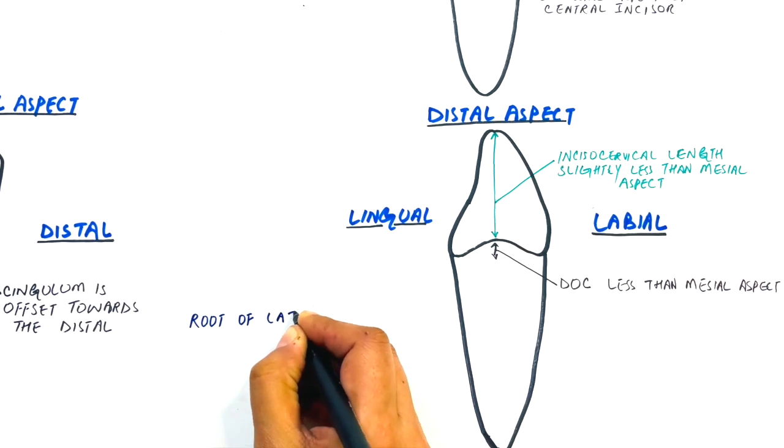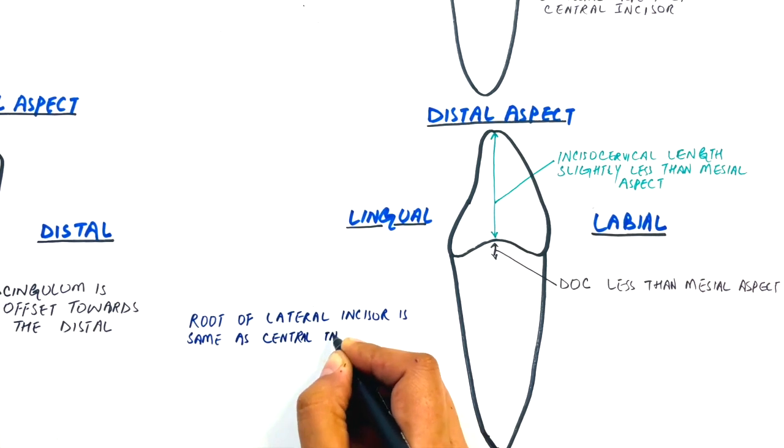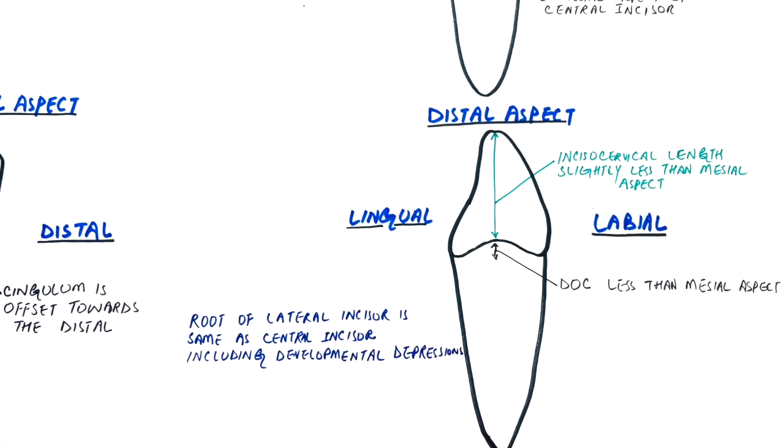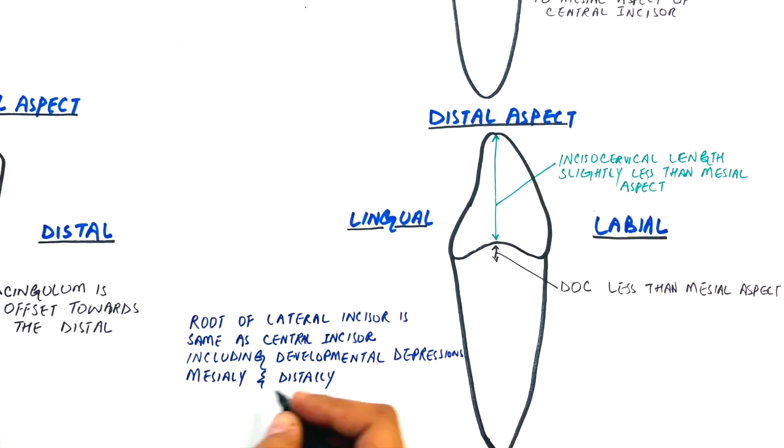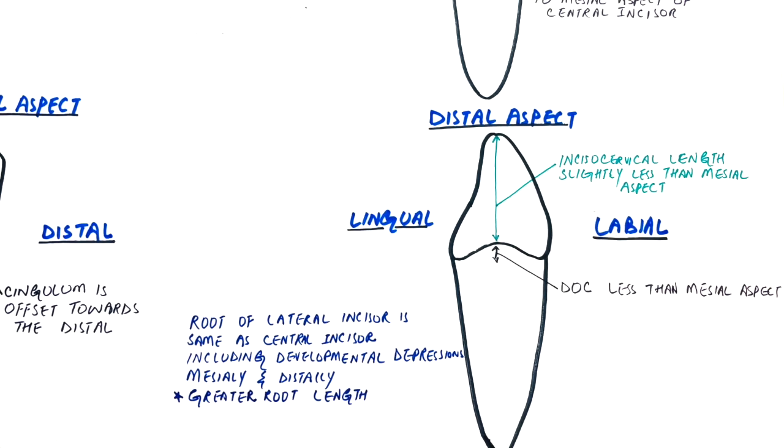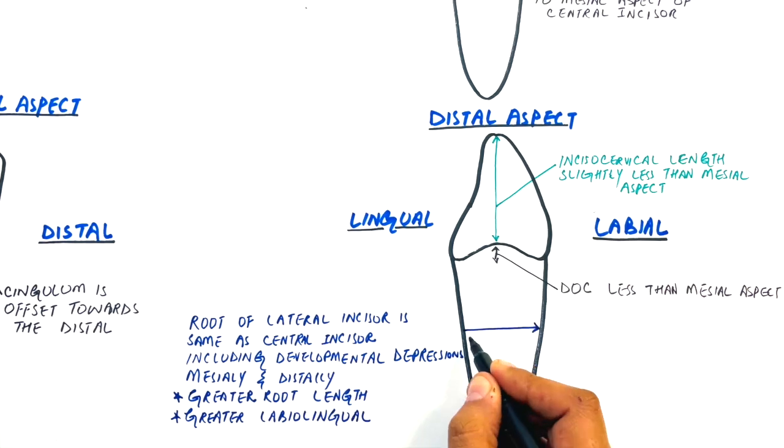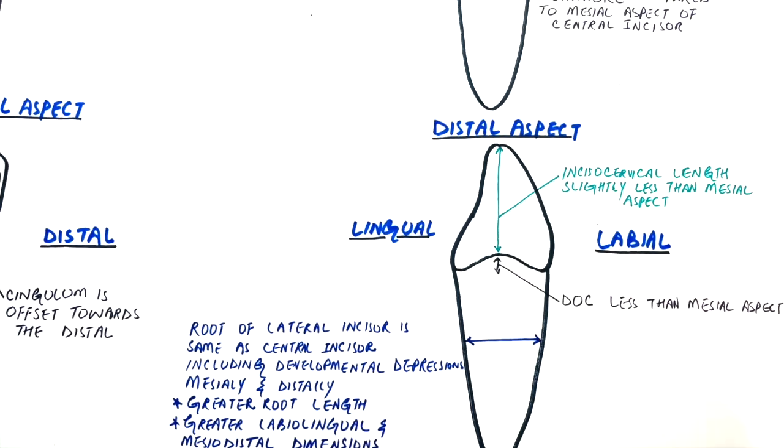The root of the mandibular lateral incisor is same as the mandibular central incisor, including the presence of developmental depressions mesially and distally. However, the root of the lateral incisor has a greater root length and comparatively greater mesio-distal and labio-lingual dimensions.